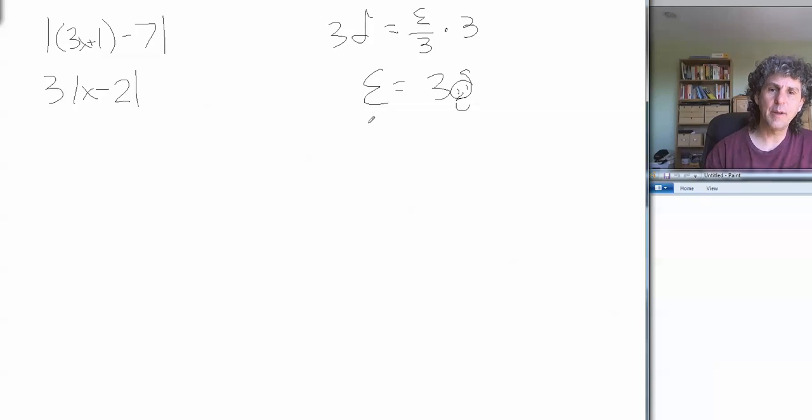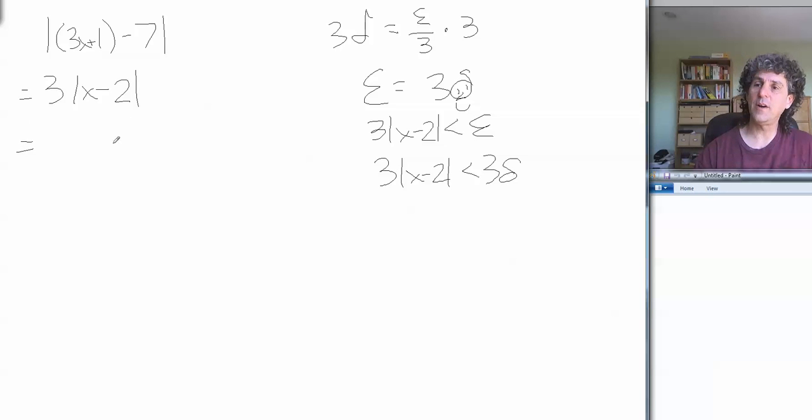And I already showed in an earlier step that 3 times the absolute value of x minus 2 was always going to be less than epsilon. So, since 3 times the absolute value of x minus 2 is less than epsilon, and epsilon equals 3 delta, that means that 3 times the absolute value of x minus 2 must be less than 3 delta. So, let's just put that into our chain of logic here. I wrote an equal sign here, but I shouldn't have, because it's actually less than. 3 times the absolute value of x minus 2 is less than 3 delta. And, since delta equals epsilon over 3, then 3 delta must equal 3 times epsilon over 3, which means it equals epsilon.